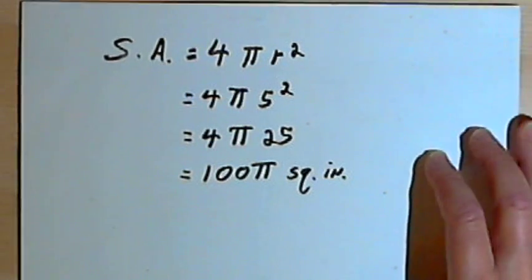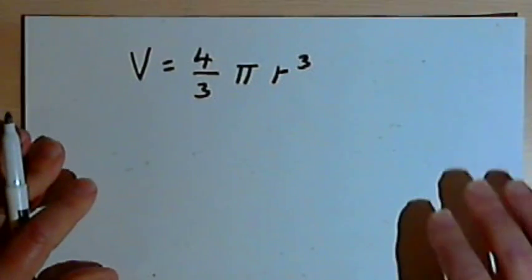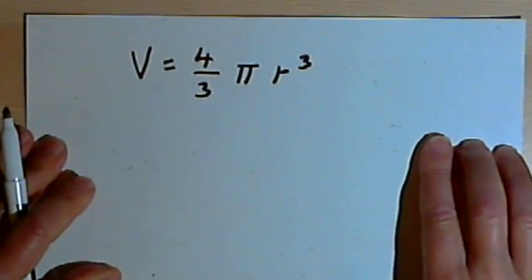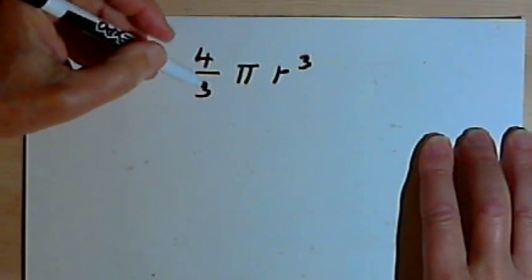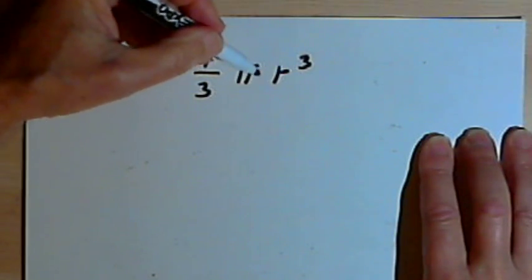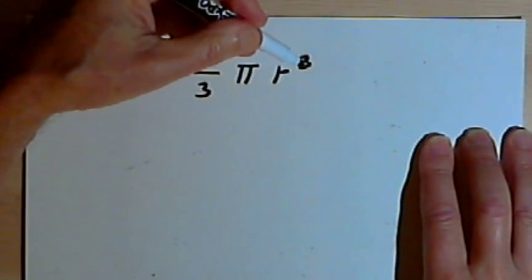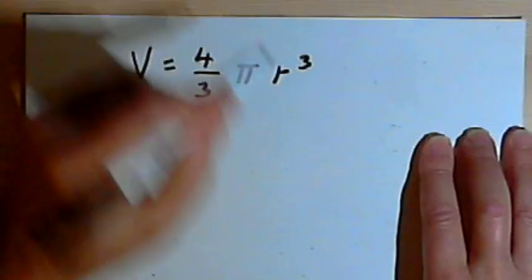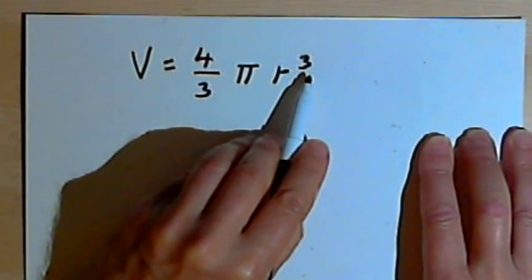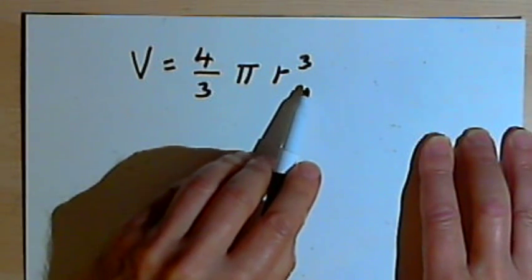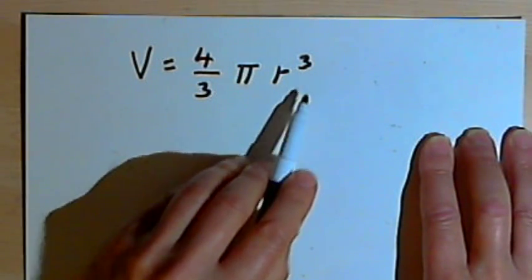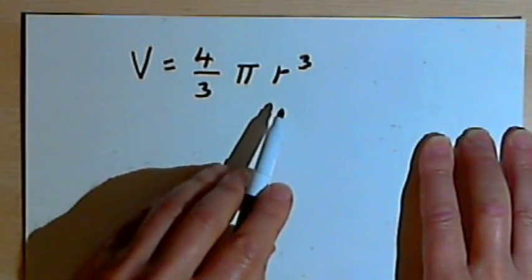Let's go on to the volume of a sphere. The formula for the volume of a sphere is that the volume is 4 thirds pi r cubed. It makes sense that it would be cubed because volume is a cubic measure. So we're going to have 4 thirds pi r cubed.